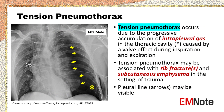Tension pneumothorax occurs due to the progressive accumulation of intrapleural gas in the thoracic cavity caused by a valve effect during inspiration and expiration. Tension pneumothorax may be associated with rib fractures and subcutaneous emphysema in the setting of trauma.